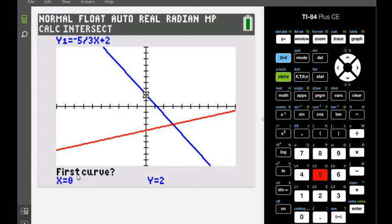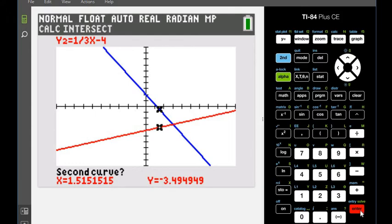And when you do this, it's going to say first curve. You can move closer to it. The first curve is just talking about the first line that I'm going to use. So somewhere on that line, we're going to hit enter. And then the second curve is just your second line. And it will always give you a guess, so you're just going to hit guess again.